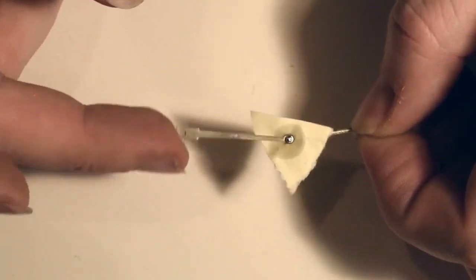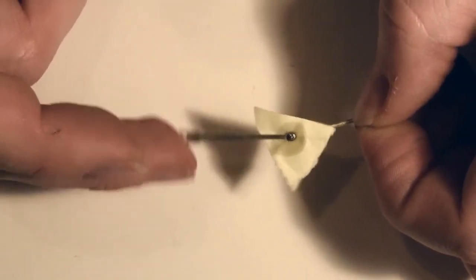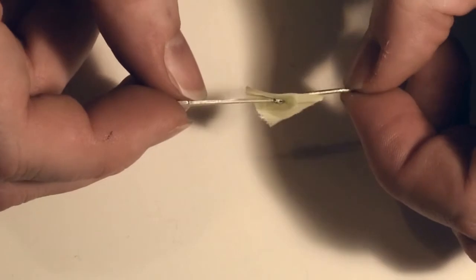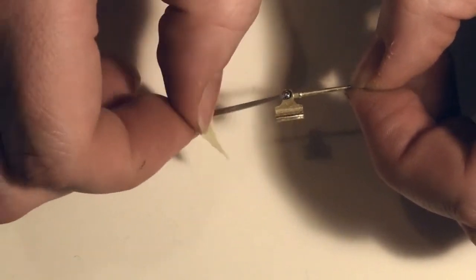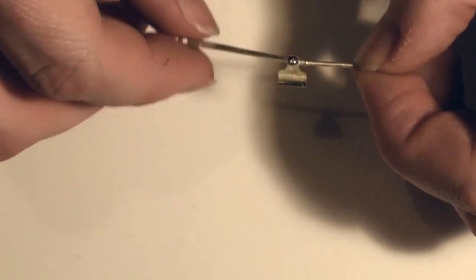Once you've done the joint, just give it a quick flick and check the joint's okay. It is in this case. And then the only thing left to do is pull away the paper. Perfect.